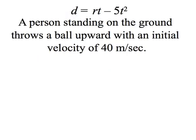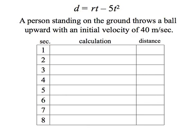So here's an example. A person standing on the ground throws a ball upward with an initial velocity of 40 meters per second. And we're going to make a little chart. We're going to see what the distance is after 1 second, then 2 seconds, and all the way to 8 seconds.